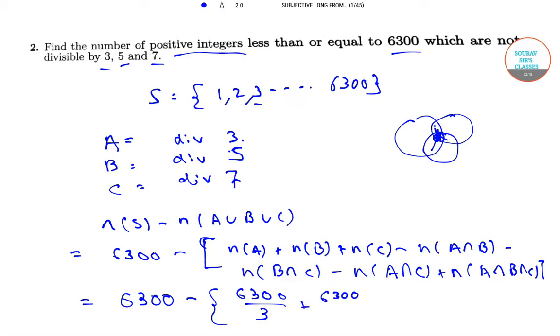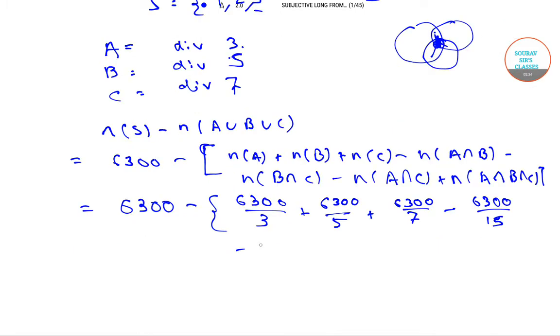So it is 6300 divided by 5 plus 6300 divided by 7 minus 6300 divided by 15 minus 6300 divided by 35, which is the product of 5 and 7.